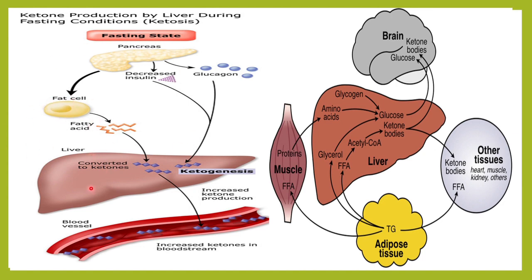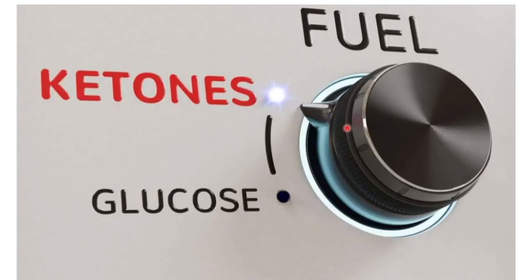During fasting states, there is decreased insulin secretion, and fat cells produce a lot of fatty acids. These fatty acids are metabolized into ketones, which are then found in the bloodstream. Ketones serve as an alternate source of energy — when glucose is unavailable, the body automatically switches to utilizing fat, which produces ketones.